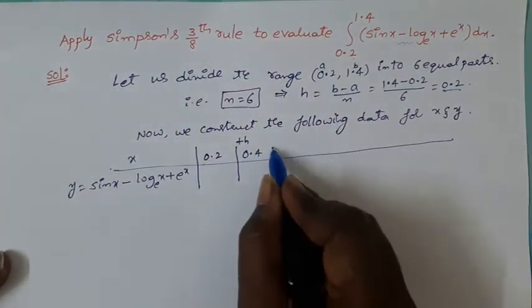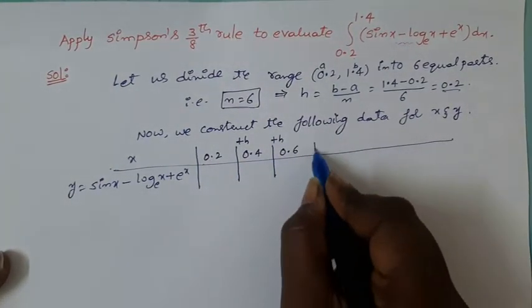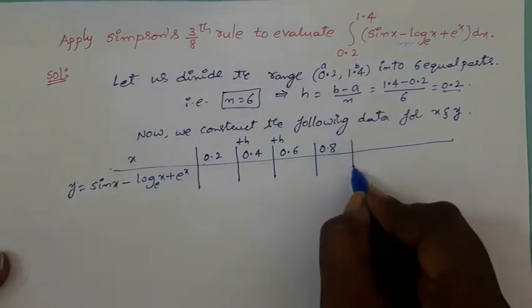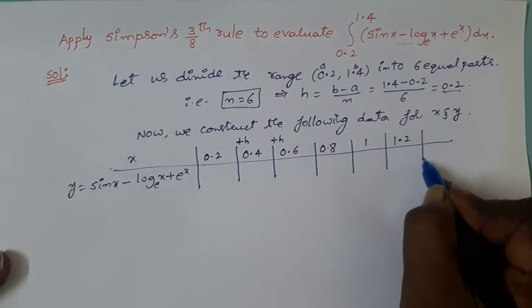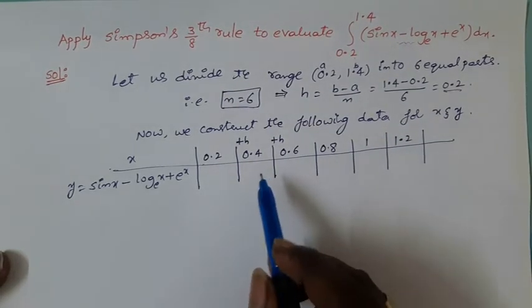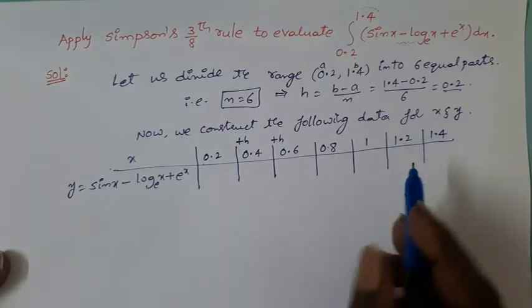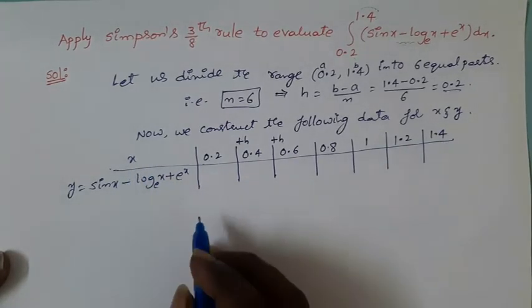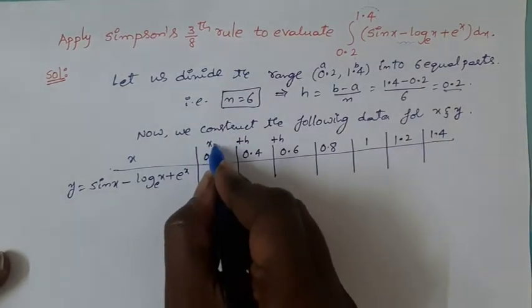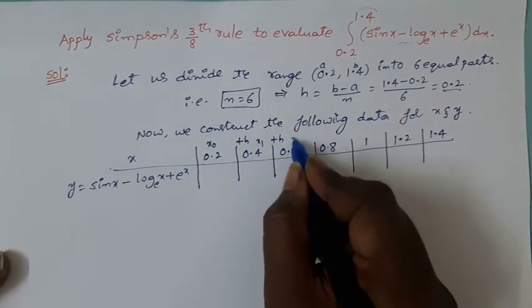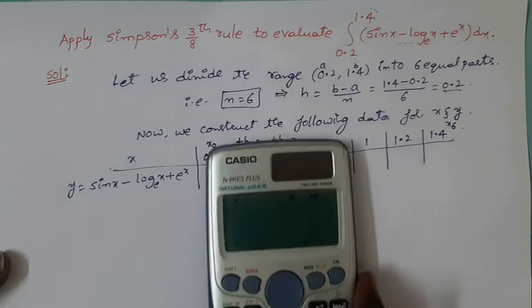What is h value? 0.2. So 0.2 plus 0.2 equals 0.4. Every time you should add plus h again, so you will get 0.6. Similarly, next value is 0.8 and next one is 1, then 1.2. Continue this process until you get the upper limit which is 1.4.